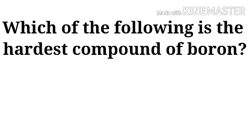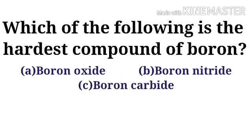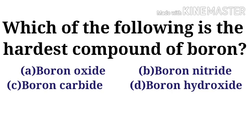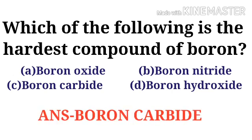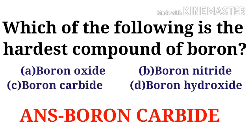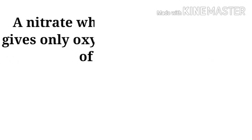Which of the following is the hardest compound of boron? Options: option A boron oxide, option B boron nitride, option C boron carbide, option D boron hydroxide. The correct option is option C: boron carbide.